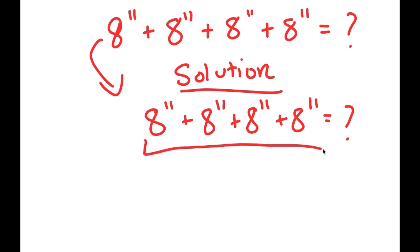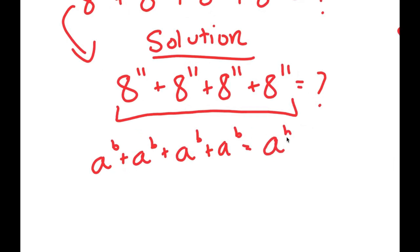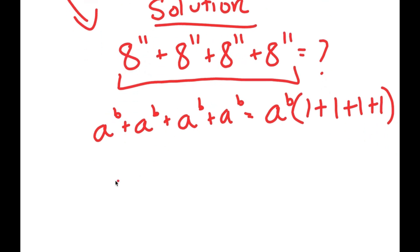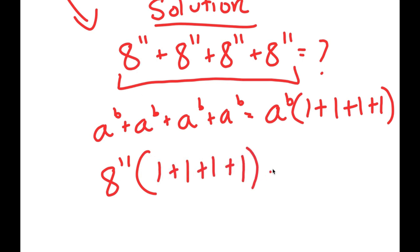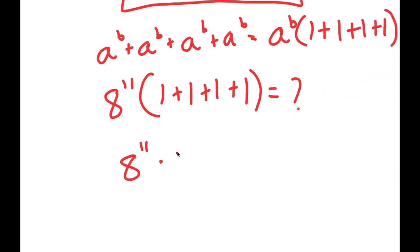Notice how all of these terms are the same — all the same terms adding with each other. If I have something in the form 8 to the power of B plus 8 to the power of B plus 8 to the power of B plus 8 to the power of B, I can factor out 8 to the power of B. So I get 8 to the power of B times 1 plus 1 plus 1 plus 1. In this case, I have 8 to the power of 11 plus itself 4 times, so I factor out 8 to the power of 11 and get 8 to the power of 11 times 1 plus 1 plus 1 plus 1. And 1 plus 1 plus 1 plus 1 equals 4, so I get 8 to the power of 11 times 4.